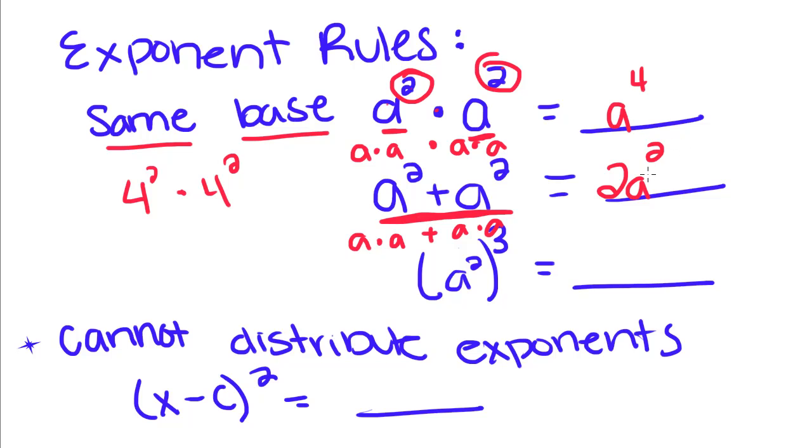You cannot, and I repeat, cannot combine exponents over addition by multiplying them. And for this last one, we have a number with an exponent raised to another exponent. So what you're going to do is you're going to multiply your powers. So this becomes a to the 6th. This is the only time you actually multiply your powers, because up here it looks like you multiplied them, but you added them. You add up here, and when it's a power to another power, you multiply.